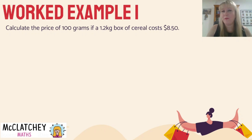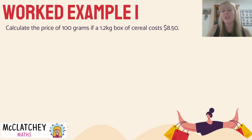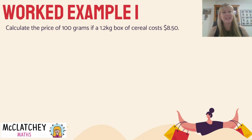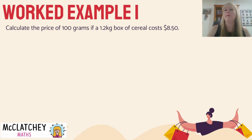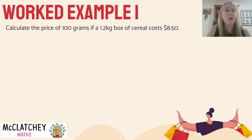We're now going to do the first of two worked examples. Calculate the price of 100 grams if a 1.2 kilo box of cereal costs $8.50. We're using the unitary method here. Sometimes you'll see the price per 100 grams or calculate the price per kilogram. The word 'per' simply means 'for every' — you've seen that in the word percentage, meaning for every 100. We're essentially calculating a kind of percentage by finding the price of 100 grams, and in our final answer we'll use the word 'per' or a slash to indicate a rate, like kilometres per hour.